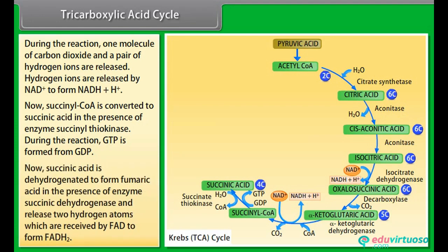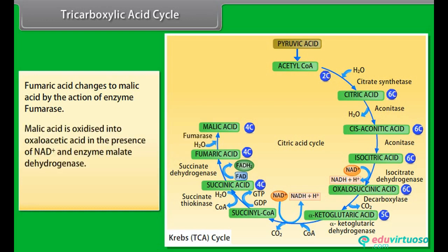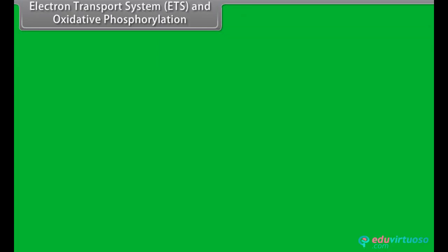Succinic acid is dehydrogenated to form fumaric acid in the presence of enzyme succinic dehydrogenase and releases two hydrogen atoms which are received by FAD to form FADH₂. Fumaric acid changes to malic acid by the action of enzyme fumarase. Malic acid is oxidized into oxaloacetic acid in the presence of NAD⁺ and enzyme malate dehydrogenase. The released pair of hydrogen atoms forms NADH+H⁺ from NAD⁺.